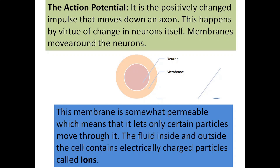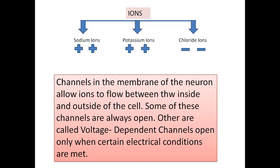The action potential is the positively charged impulse that moves down an axon. This happens by virtue of changes in the neuron itself — membranes move around the neurons. The membrane is somewhat permeable, meaning it lets only certain particles move through it. The fluid inside and outside the cell contains electrically charged particles called ions: sodium ions (positively charged), potassium ions (positively charged), and chloride ions (negatively charged). Channels in the membrane allow ions to flow between the inside and outside of the cell. Some channels are always open; others are called voltage-dependent channels, which open only when certain electrical conditions are met.